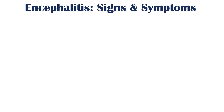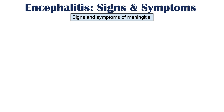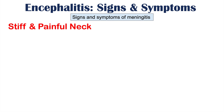Along with brain inflammation, there can be inflammation of the meninges — the layers covering the brain and spinal cord — leading to signs and symptoms of meningitis. Sometimes we call this meningoencephalitis, where there is both inflammation of the brain and of the meninges simultaneously.